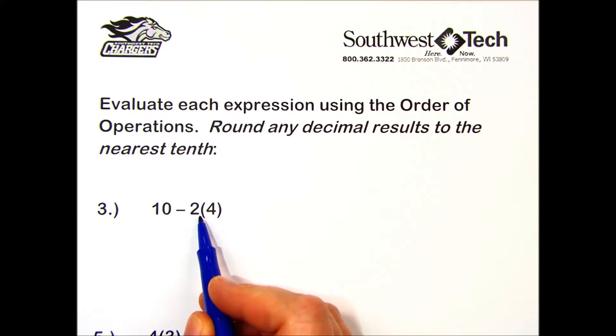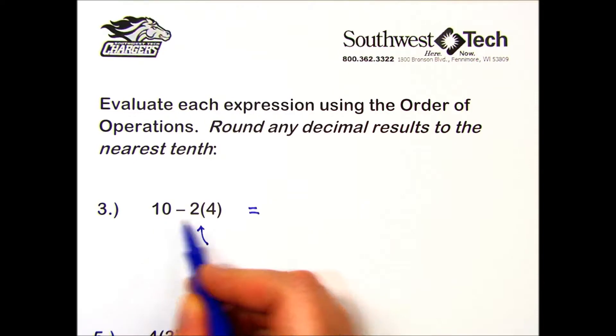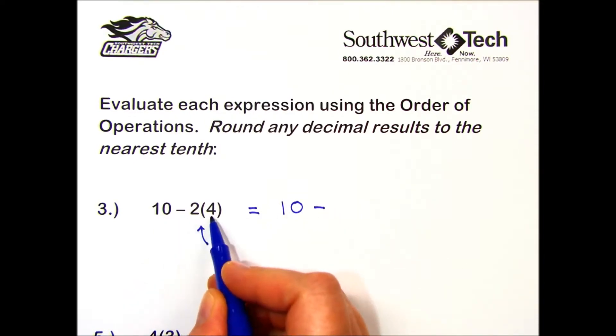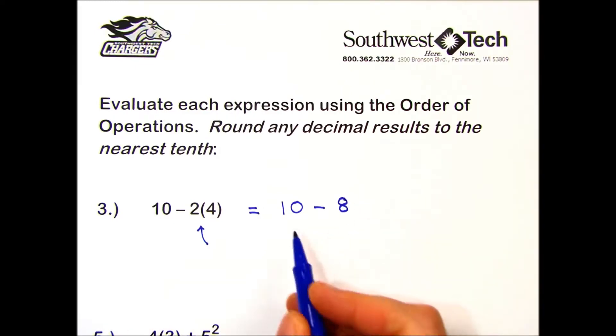According to my order of operations, I'm going to perform the multiplication first and rewrite my expression: 10 minus the result of 2 times 4, which is 8. Finally, I will perform the subtraction. 10 minus 8 is 2.